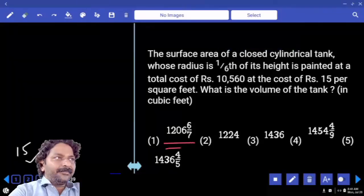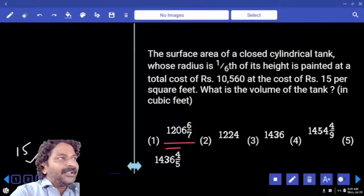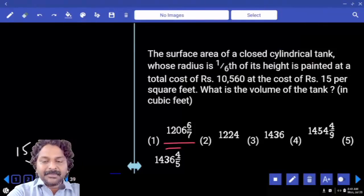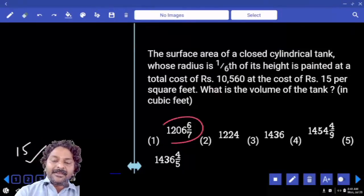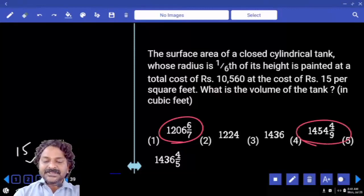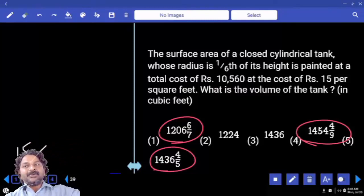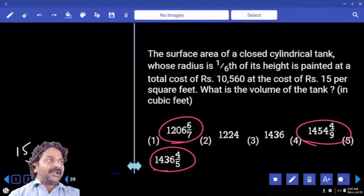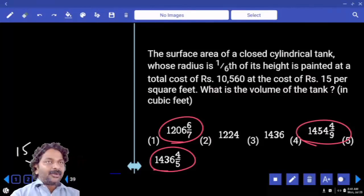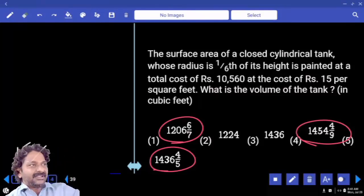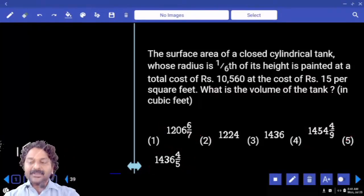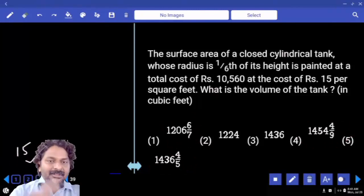If you have only integers, definitely we can go and verify 11 multiplication. But the problem here is we have mixed fractions and how many options are there? We have to convert mixed fraction to improper fraction and then verify whether the numerator is 11 multiple or not. To convert three mixed fractions it takes time. So I don't want to go with 11 multiplication rule. I want to solve the question.